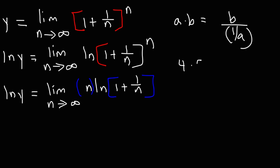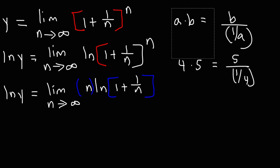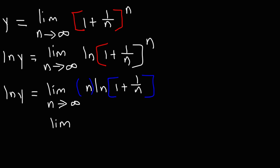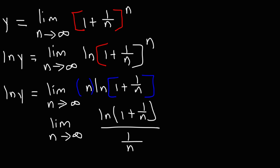To illustrate with real numbers: 4 times 5, which is 20, is equivalent to 5 divided by 1/4 — they both equal 20. So based on that, we convert n times the natural log of 1 plus 1 over n to ln(1 plus 1 over n) divided by 1 over n. These are mathematically equivalent.